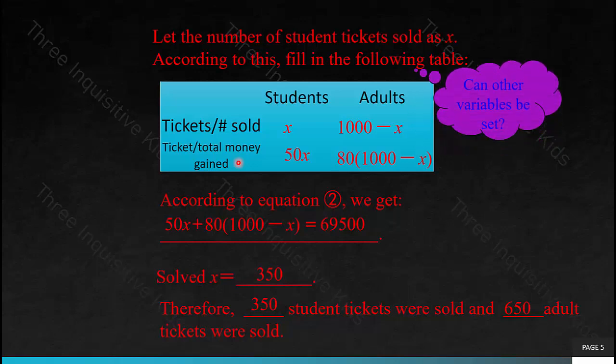Now, think about this: can other variables be set? Remember, at the beginning of this lesson in the learning goals, we talked about indirectly setting the variable. Sometimes what the question is asking you is not the variable that you should be setting, or maybe you're being asked multiple things. What other variables can you set to make this more simple, or depending on your way of thinking, what is the best type of variable to be set?